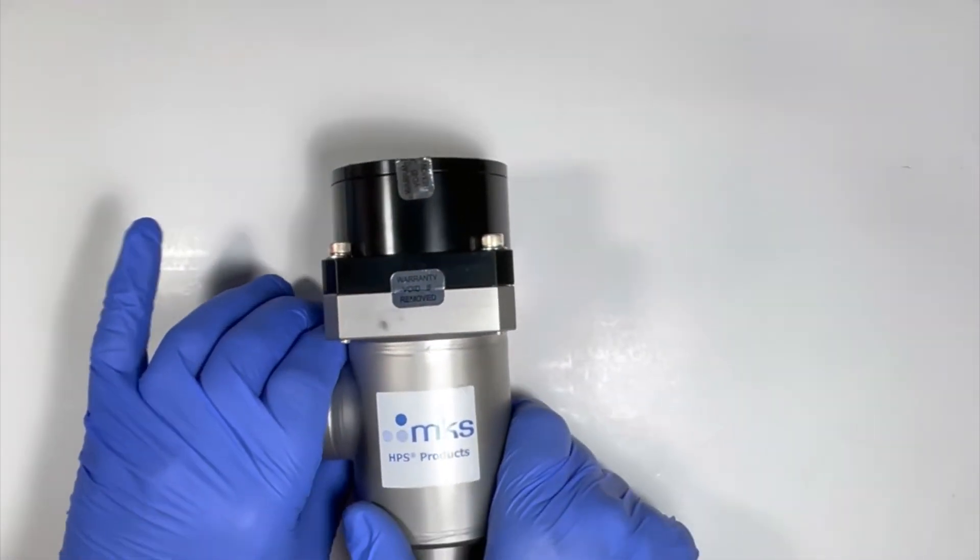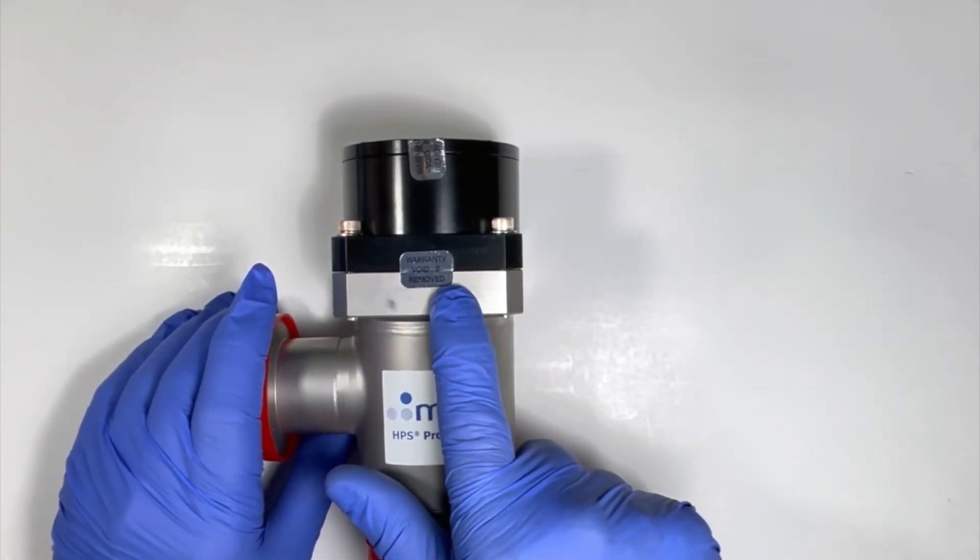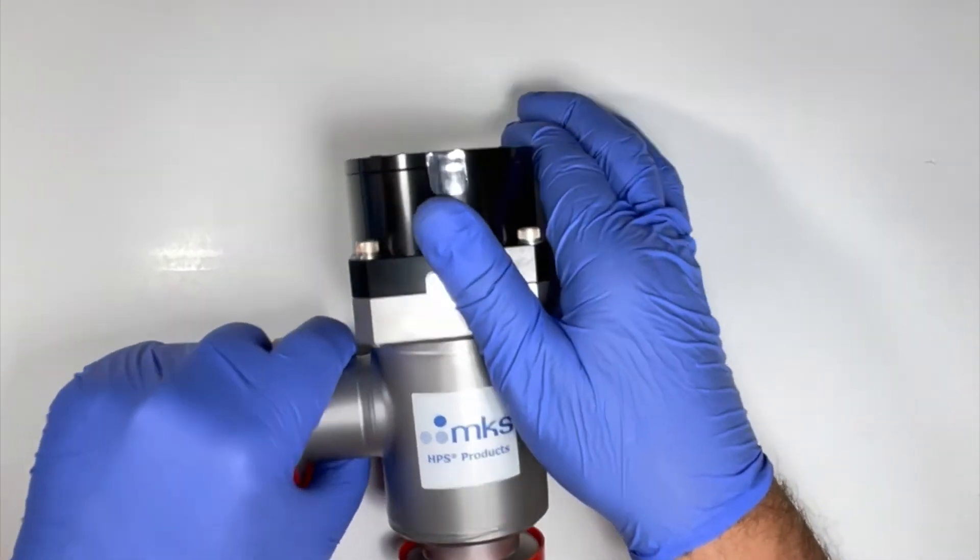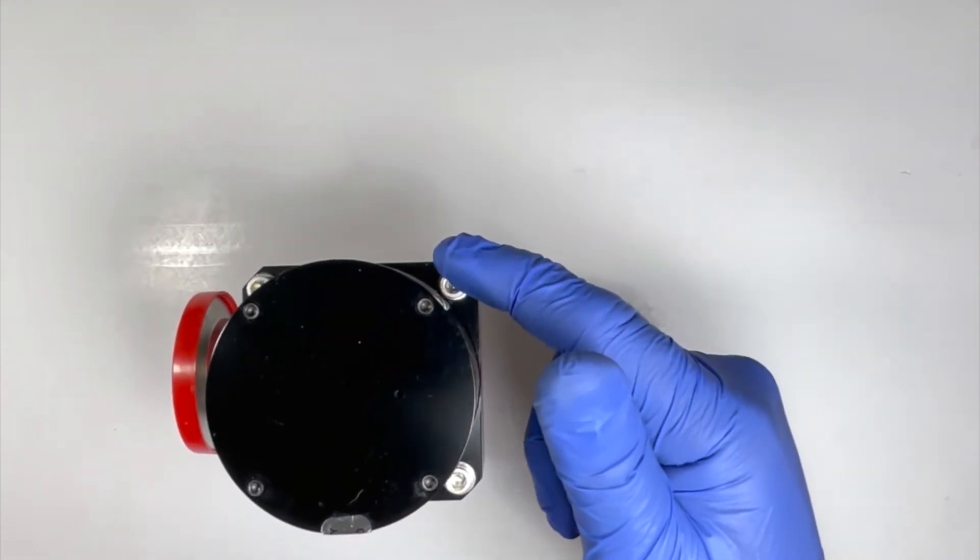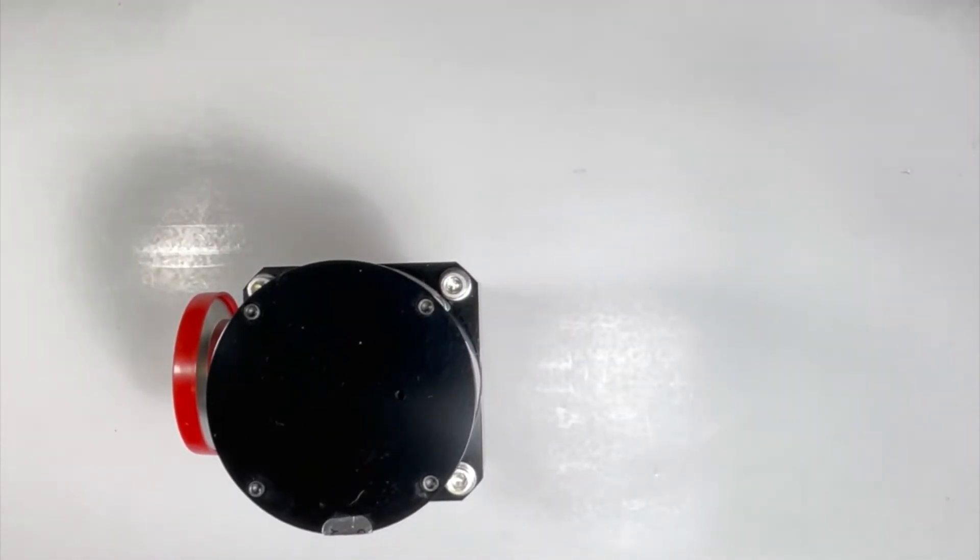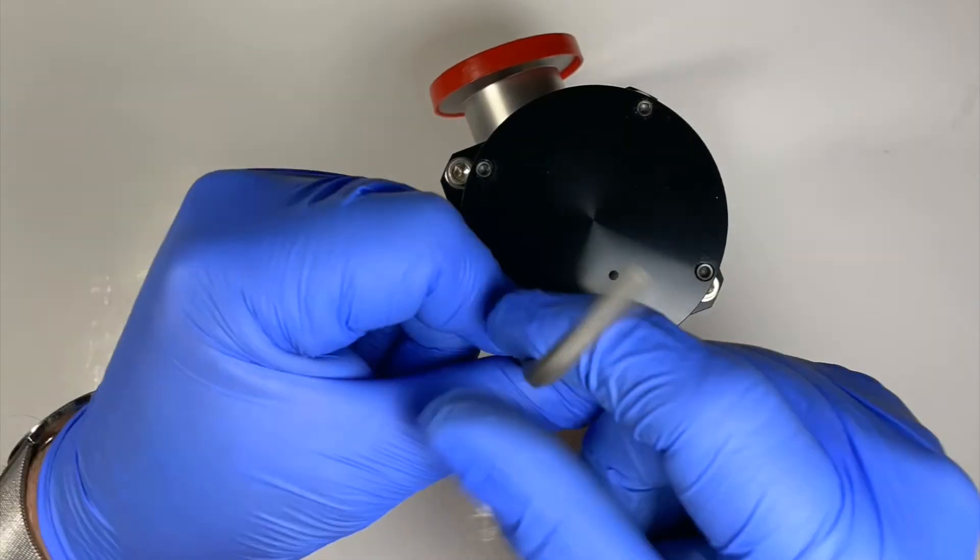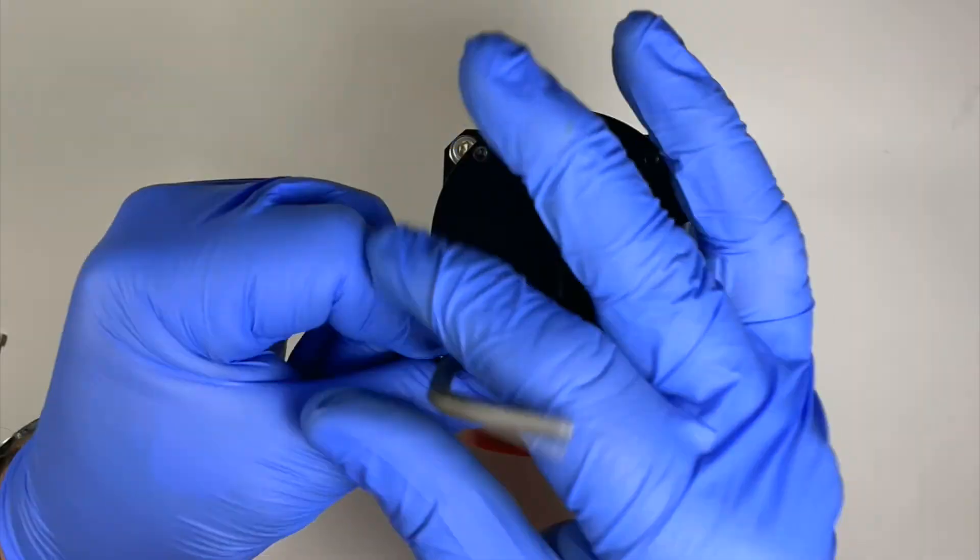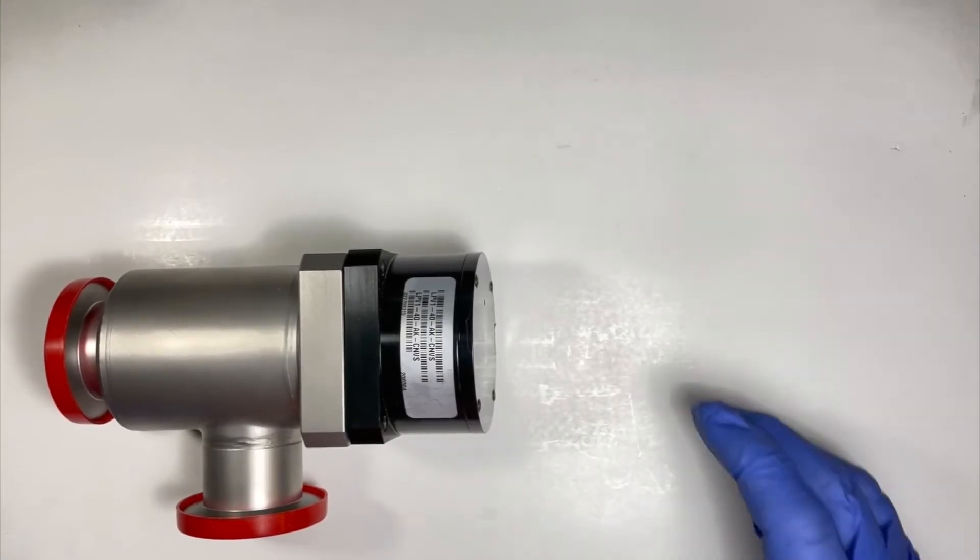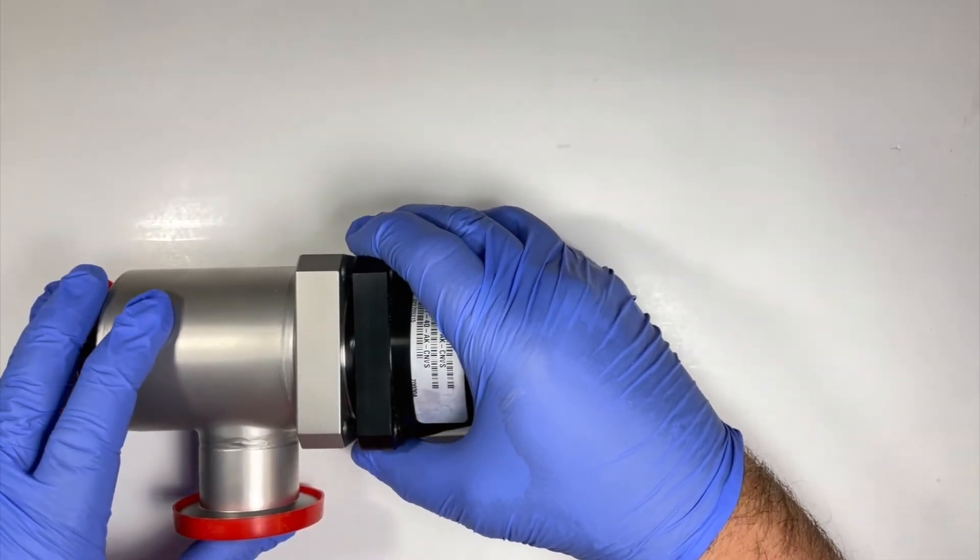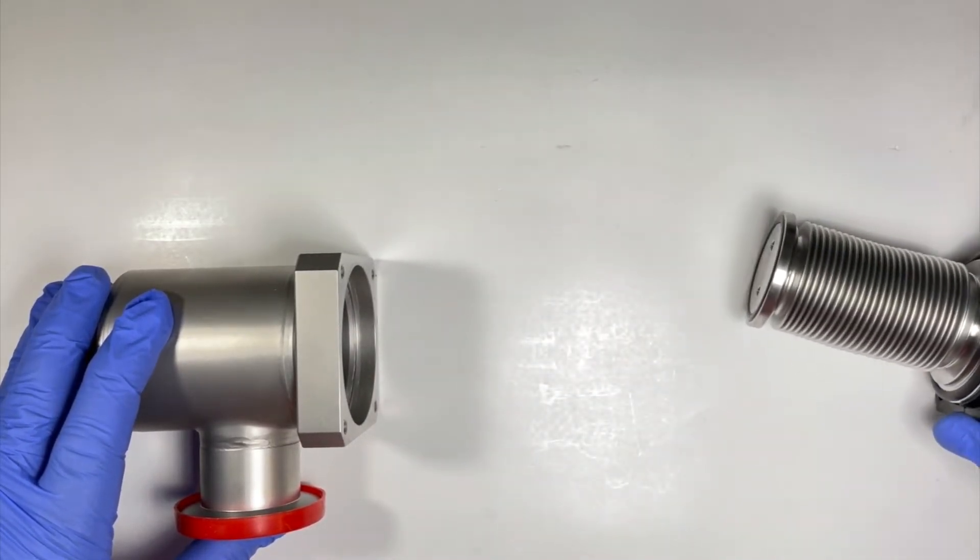Remove or cut the label that notes warranty is void if removed. Then proceed to remove the four silver bolts on the top of the valve using a 5/32 inch Allen wrench. Once the bolts are removed, you will remove the actuator cap and internals by gently pulling straight out of the valve.